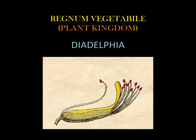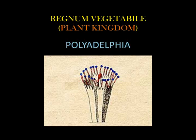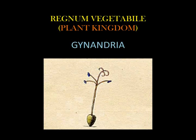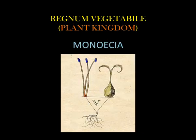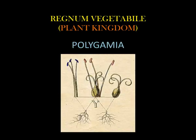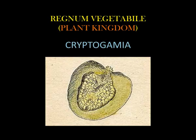The remaining plant classes were: Diadelphia, Polyadelphia, Syngenesia, Gynandria, Monoecia, Dioecia, Polygamia, and Cryptogamia.